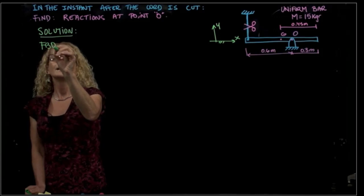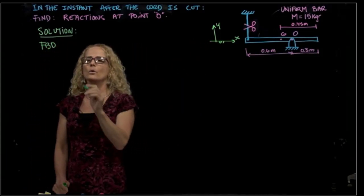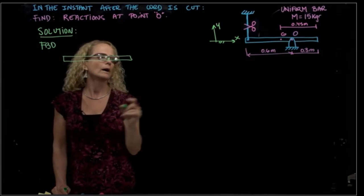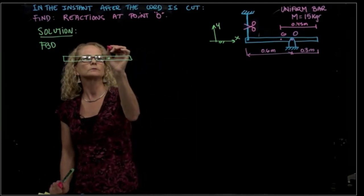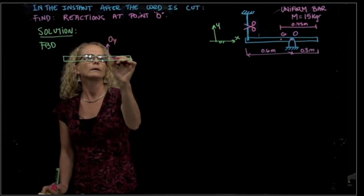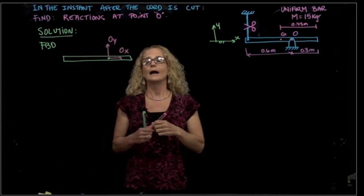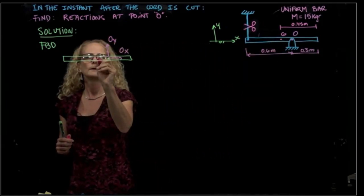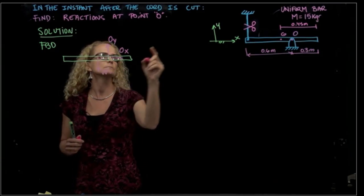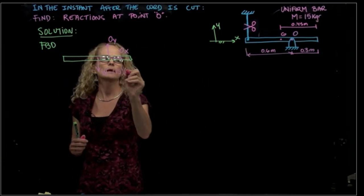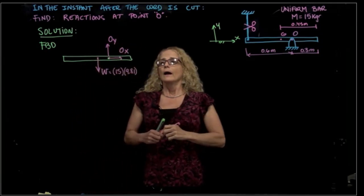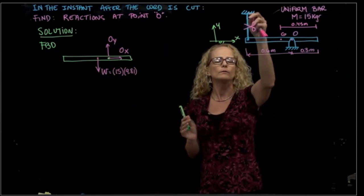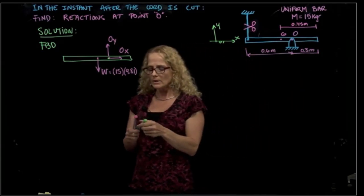So the free body diagram, at the instant that I cut the cord, will be: at O, I have two reactions, OY and OX. Then I do not have anything in the cord because I already cut the cord, and I have only the weight. And the weight equals mass times gravity. I have 15 kilograms times 9.81. No tension because we cut that cord and we allow motion. If we have the cable, we have equilibrium.